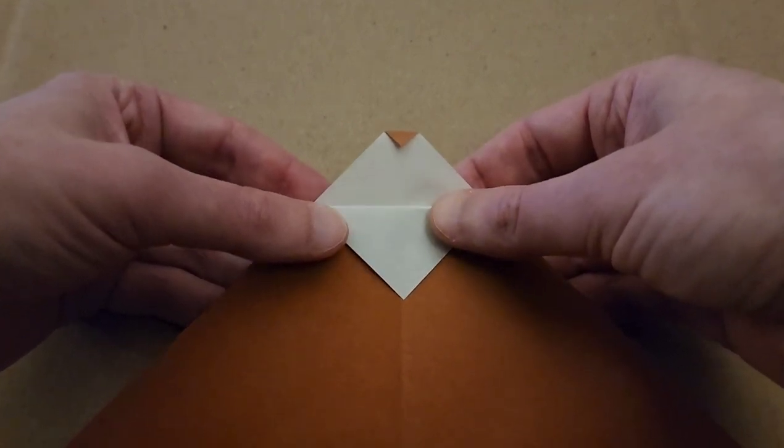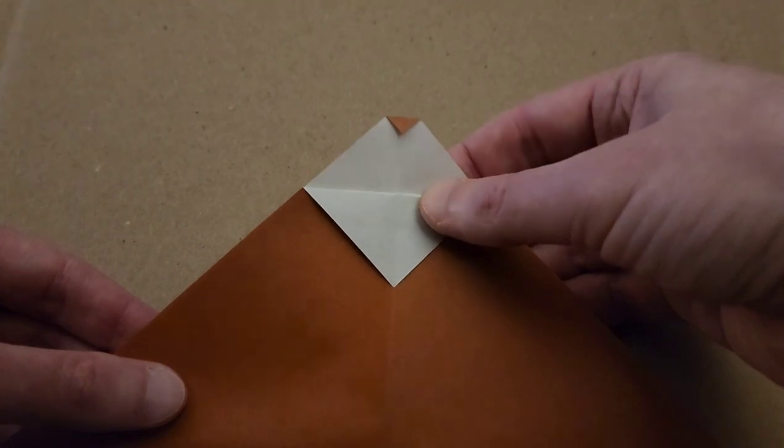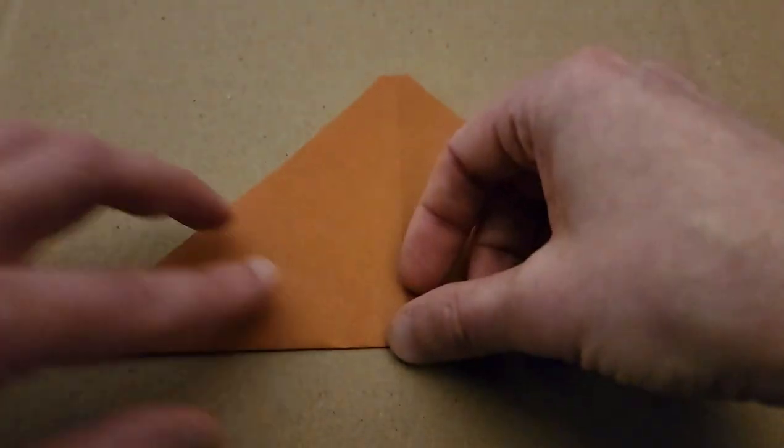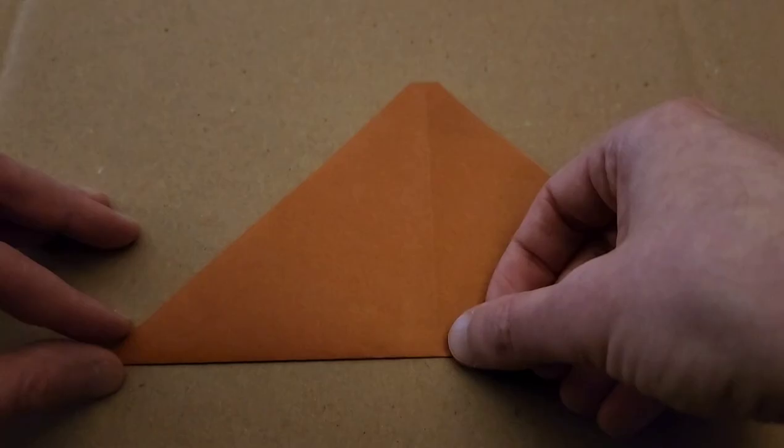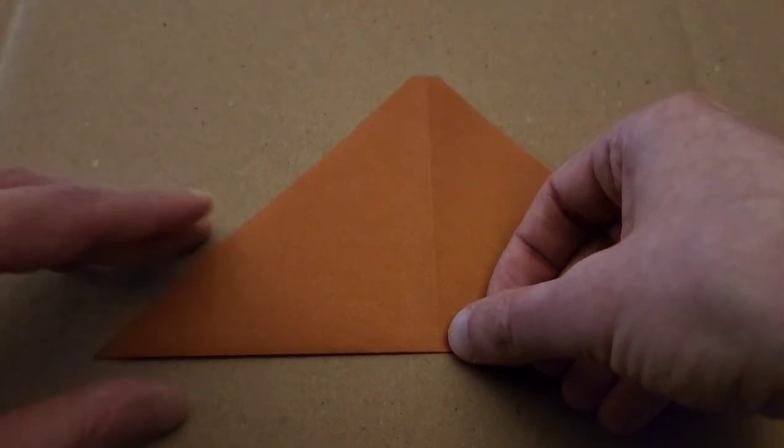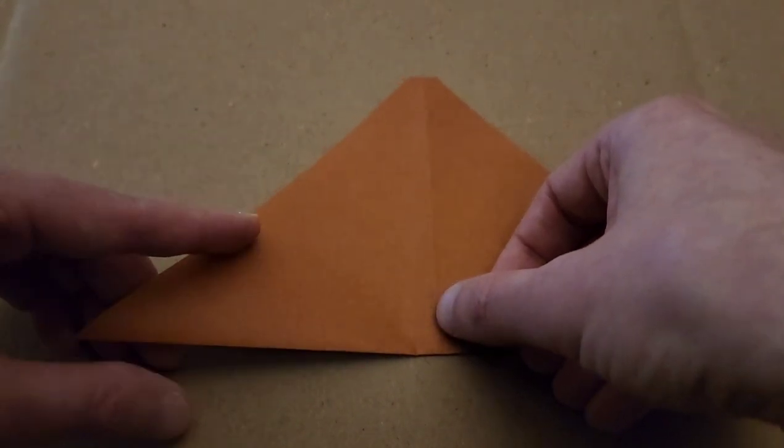And that's going to be his little nose. All right, then we're going to flip it over and we're going to proceed with his legs. All righty. All right, so for the legs, again, there is going to be a little bit of guesswork here. It's not exact.